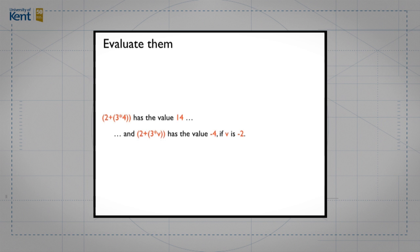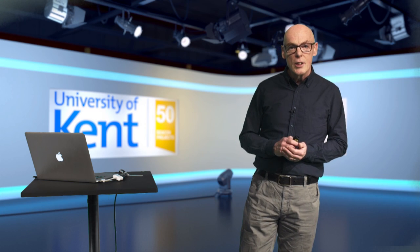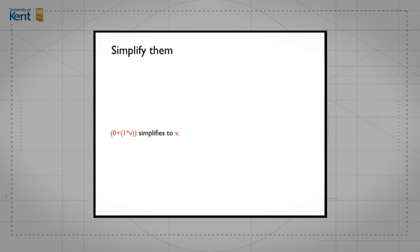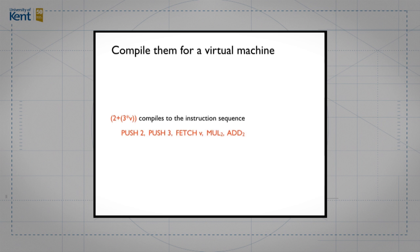The first thing we might do with these expressions is evaluate them. If I say tell me the value of two plus three times four, we first multiply three and four to get 12, then add two to get 14. If we say what's the value of two plus three times v, we can't give it a value because we don't know what v is, but if v is minus two, that works out to two plus minus six, which is minus four. We can also simplify expressions — for example, zero plus one times v simplifies to one times v, which simplifies down to v.